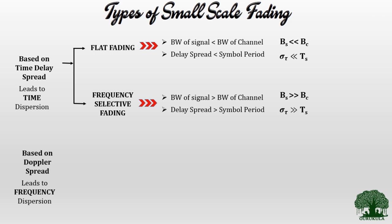Now we will see how small scale fading is classified based on Doppler spread. This can also be further classified into two types: fast fading and slow fading.